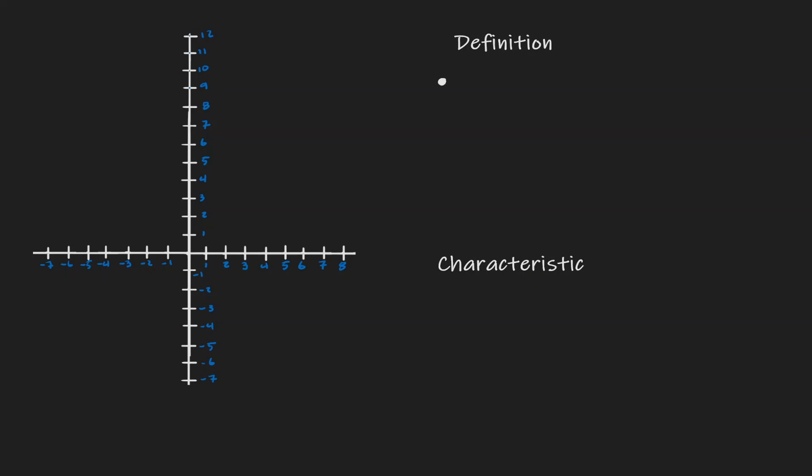Perpendicular lines are two lines whose intersection form a 90 degree angle, which is also known as a right angle.